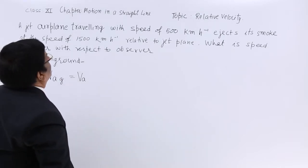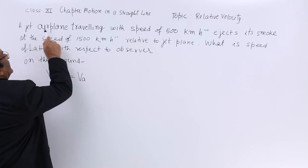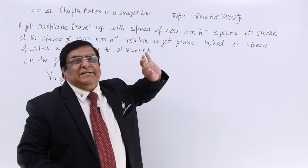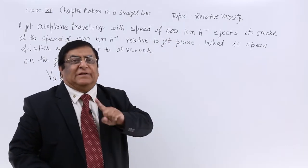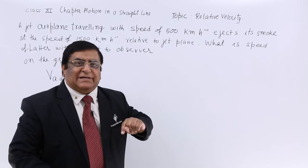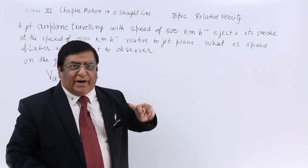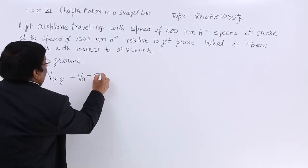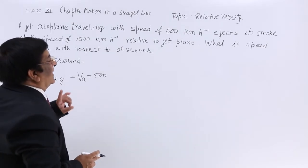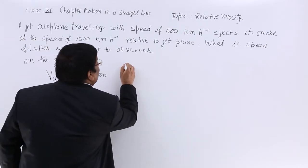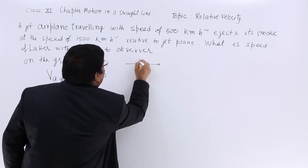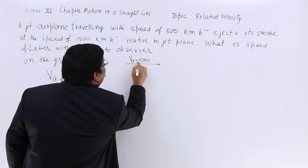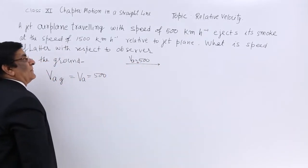How much is this? It is given that the jet airplane is traveling with speed 500 kilometers. Nothing is mentioned that it is with respect to anything — if nothing is mentioned, we take it as with respect to the ground, and this is absolute velocity. So VA is equal to 500, and we take any one direction as positive. The jet airplane is going in this direction with a speed of 500, so we mark it plus.